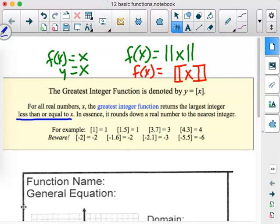So for all real numbers x, the greatest integer function returns the largest integer that is less than or equal to x. So that would mean I need to know what the integers are. The integers are negative 3, negative 2, negative 1, 0, 1, 2, 3. So that's incredibly important to this function. In essence, it rounds down any real number to the nearest integer.